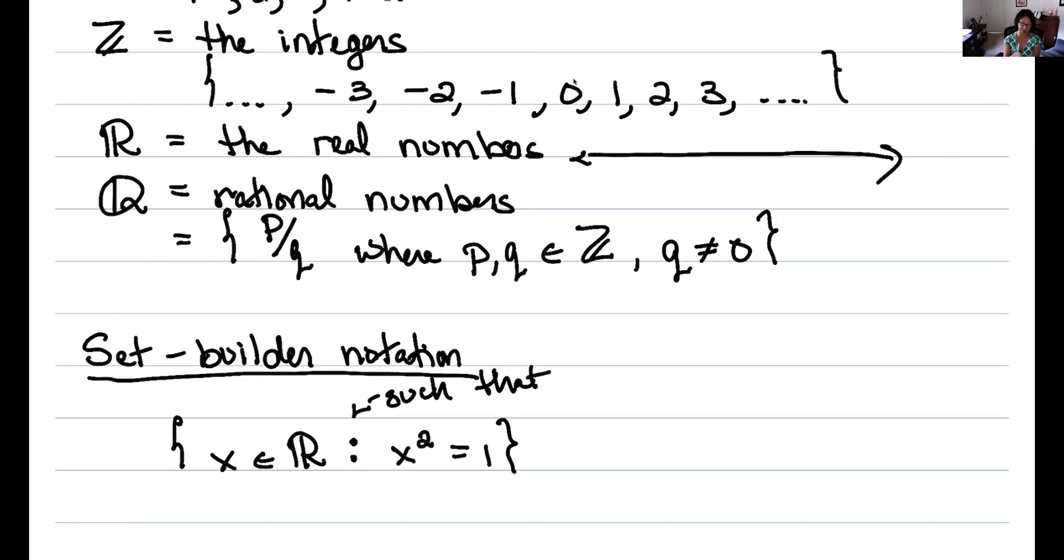And so what goes on to the right of the colon is like the criteria or the condition that the things on the left have to meet to be part of my set. So here I look at all the real numbers and then I just take the ones whose square is one. And in this case I could write the elements of this set, I could write them all down because I know it's just positive one and negative one.